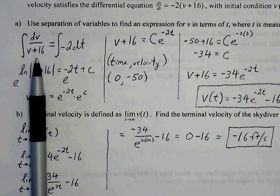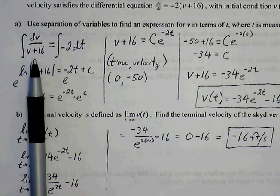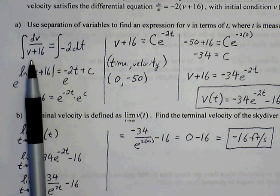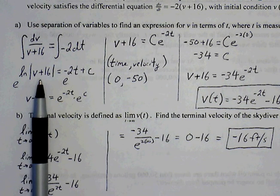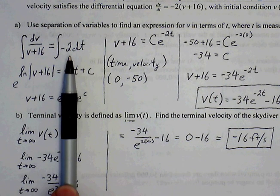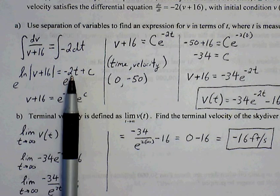So dv over (v plus 16) equals negative 2 times dt. So now we can take the appropriate integral rule. The left side is simply in the form of 1 over u, so we get natural log of the absolute value of (v plus 16). On the right side, we can apply power rule, so negative 2t plus c.